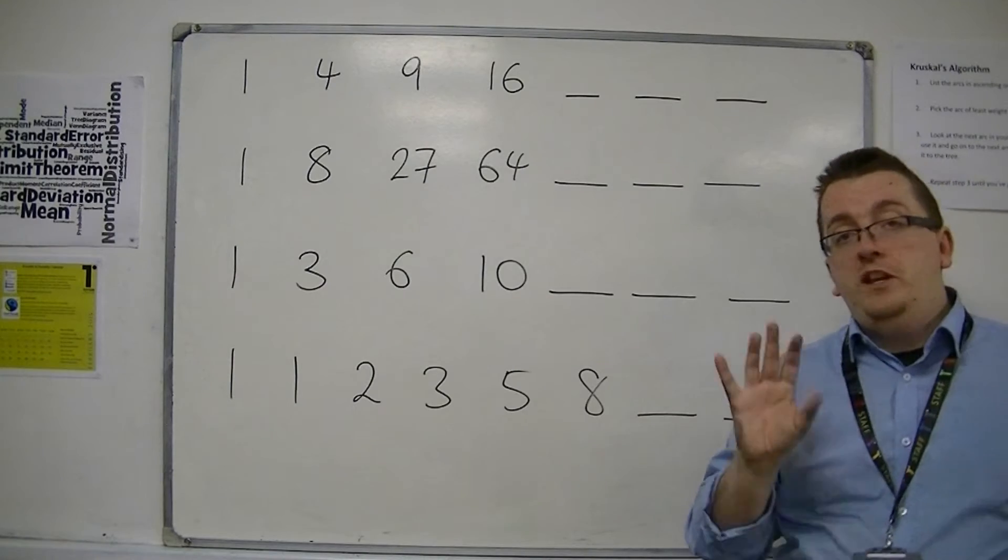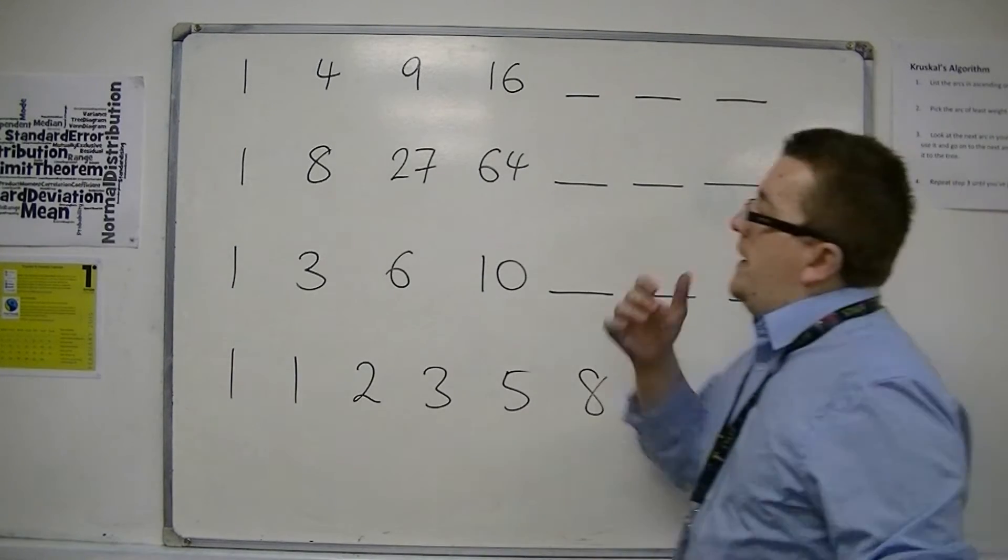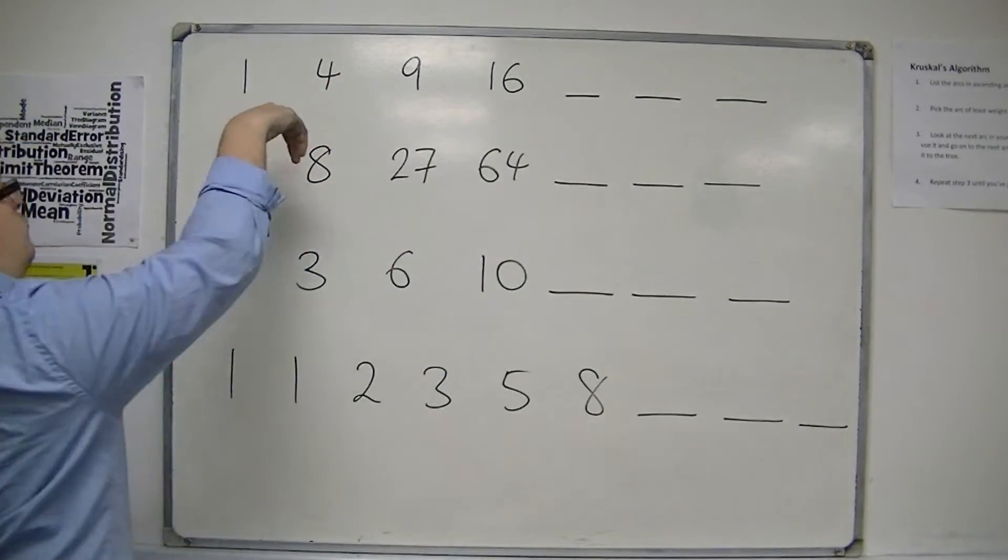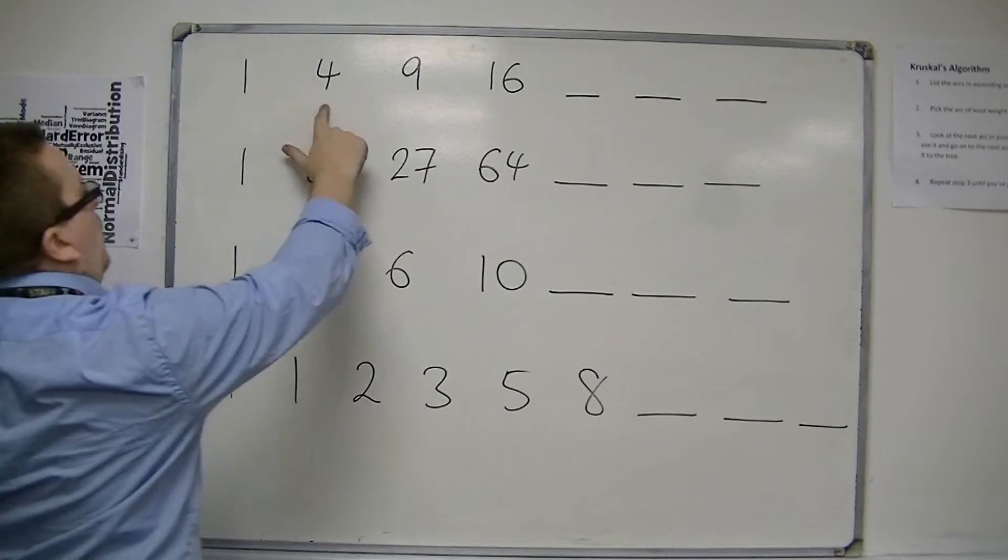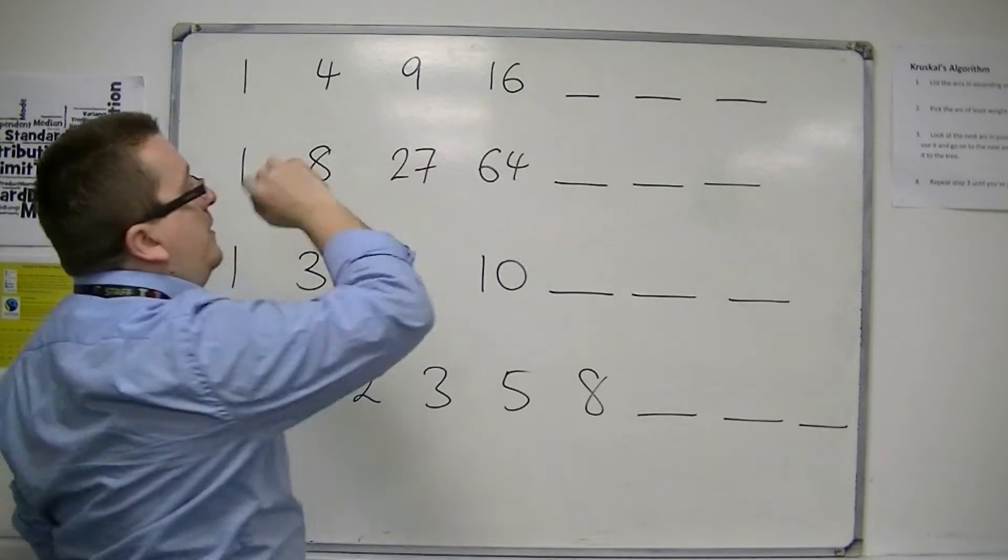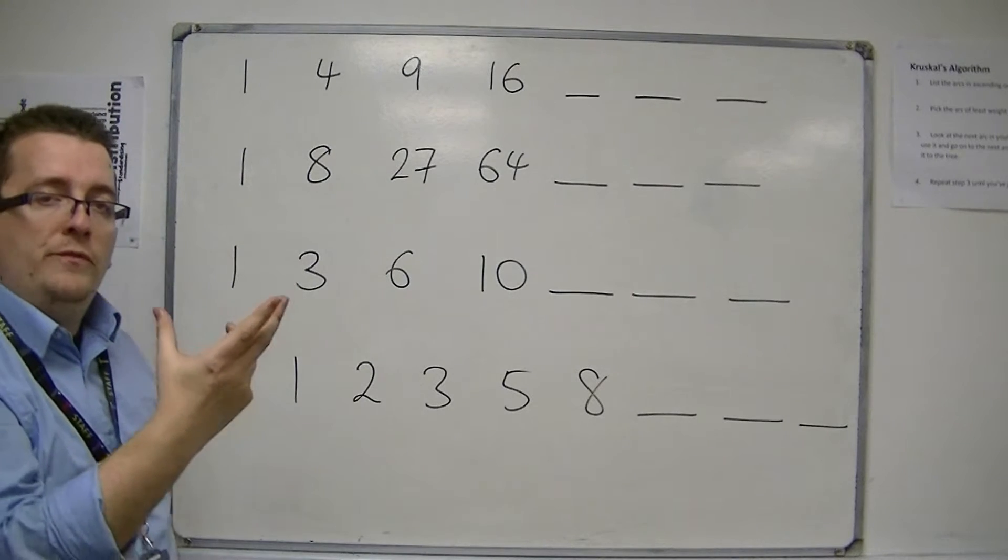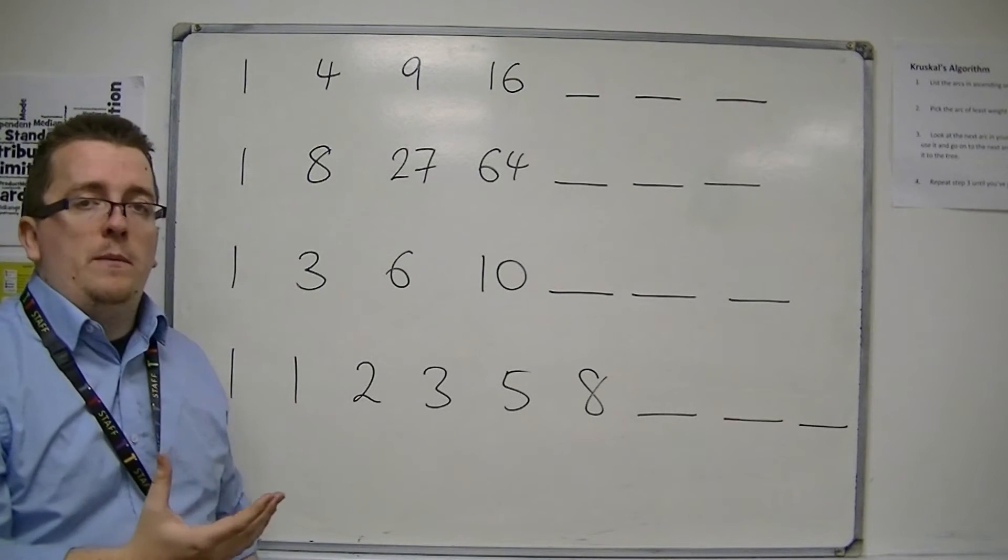So assuming you've done that and you've had a go, then what you should recognize is that the 1, 4, 9, 16, these are all a certain type of number. These are the square numbers.